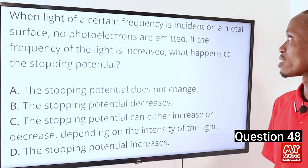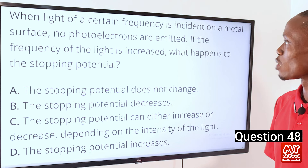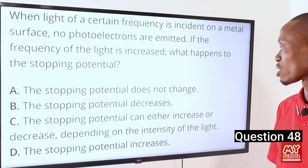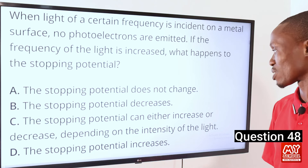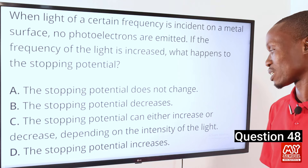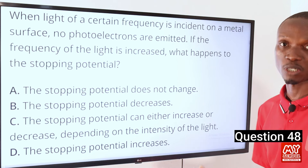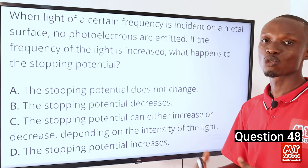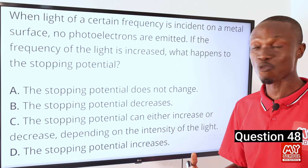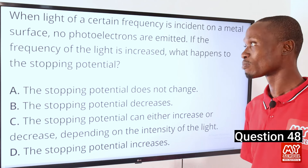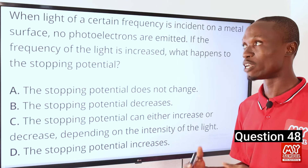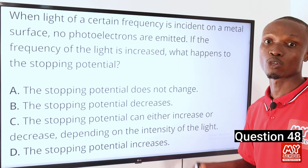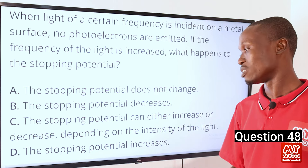Question 48. When light of a certain frequency is incident on a metal surface and no photoelectrons are emitted, if the frequency of light is increased, what happens to the stopping potential? Stopping potential is the voltage required to stop the photoelectrons from reaching the anode. If frequency increases, the kinetic energy of photoelectrons also increases. To stop them from reaching the anode, a higher stopping potential is needed — so that makes option D the correct option: the stopping potential increases.